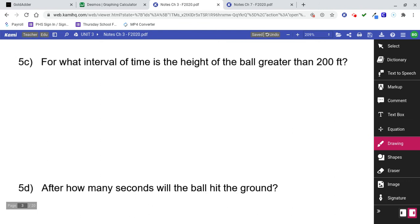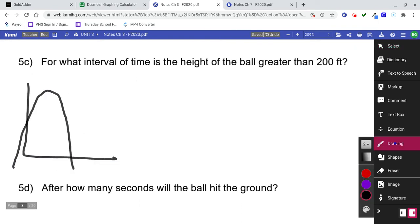Part 5C, for what interval of time is the height of the ball greater than 200 feet? That is an interesting question. If you think about this, look at our graph. Our graph looks something like this. It's steeper than that. But what we want to look at here is what happens at 200 feet? We want to know about the part of the parabola that's greater than 200 feet. That's what we're looking at.